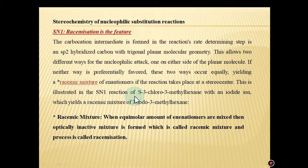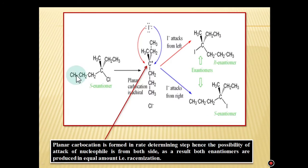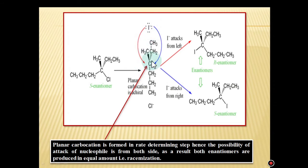This is illustrated in the SN1 reaction of the S configuration molecule 3-chloro-3-methylhexane with an iodide ion, which yields a racemic mixture of 3-iodo-3-methylhexane. In the rate determining step, the carbocation is formed. Since the carbocation is sp2 hybridized with planar geometry, a planar carbocation is formed.